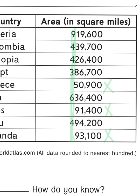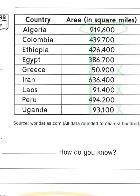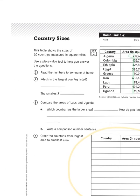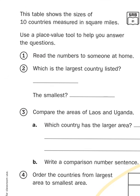Right up at the top, we have a number in the nine hundred thousands. That number belongs to the country of Algeria in northern Africa — 919,600 square miles. So in order to answer that question, we'd write the name Algeria.